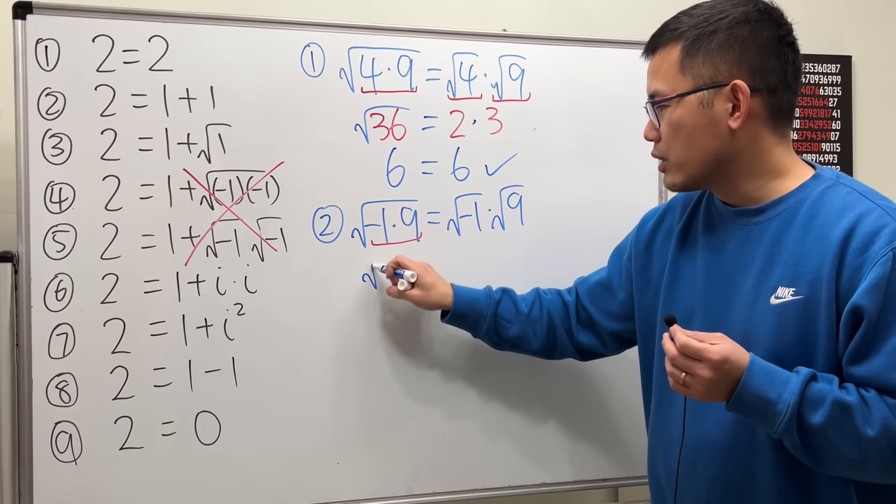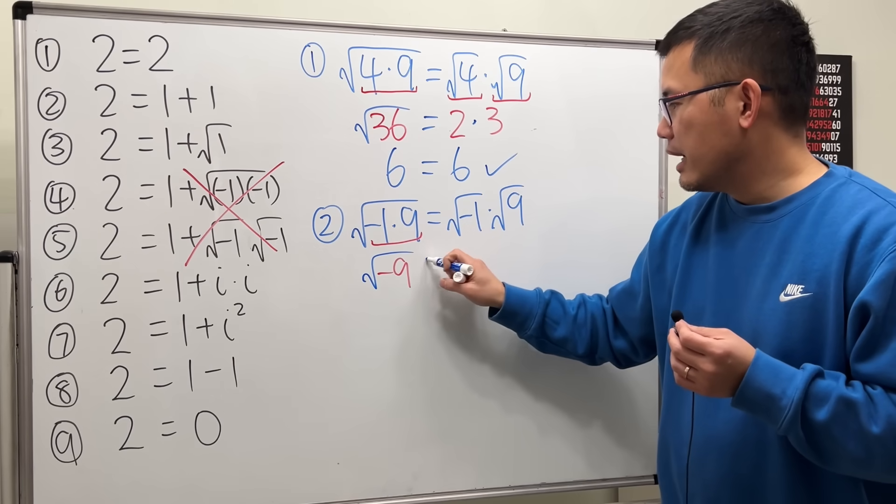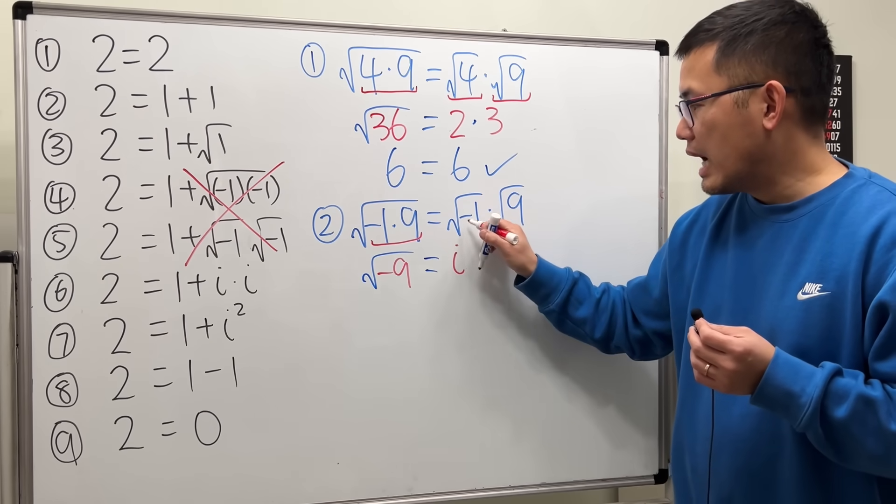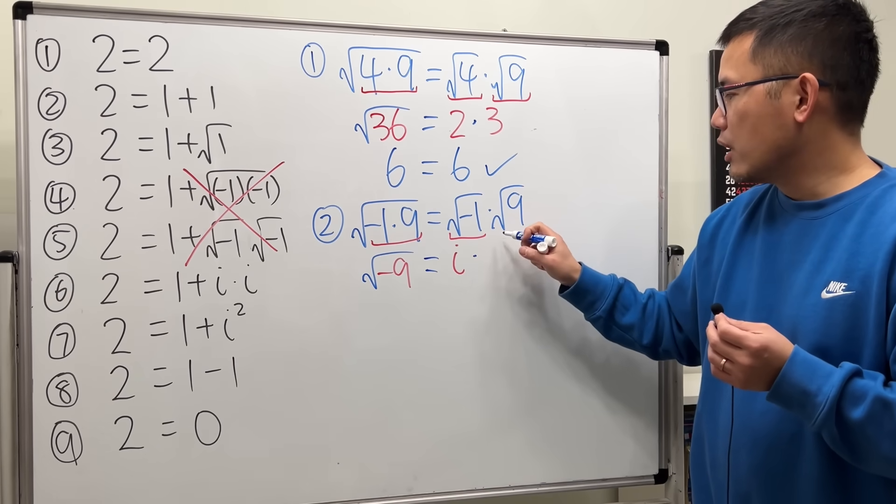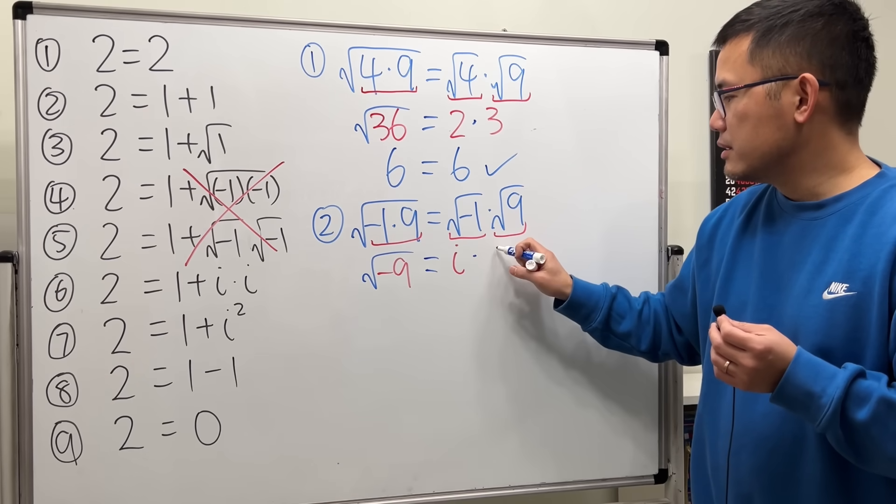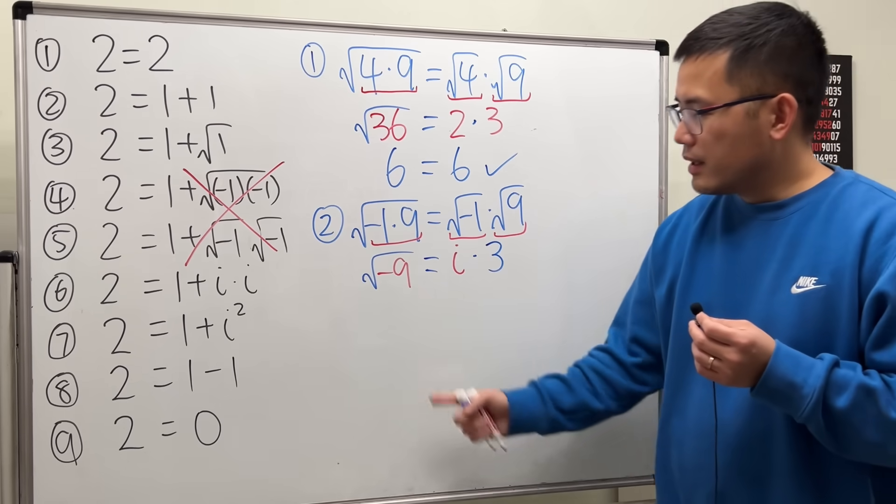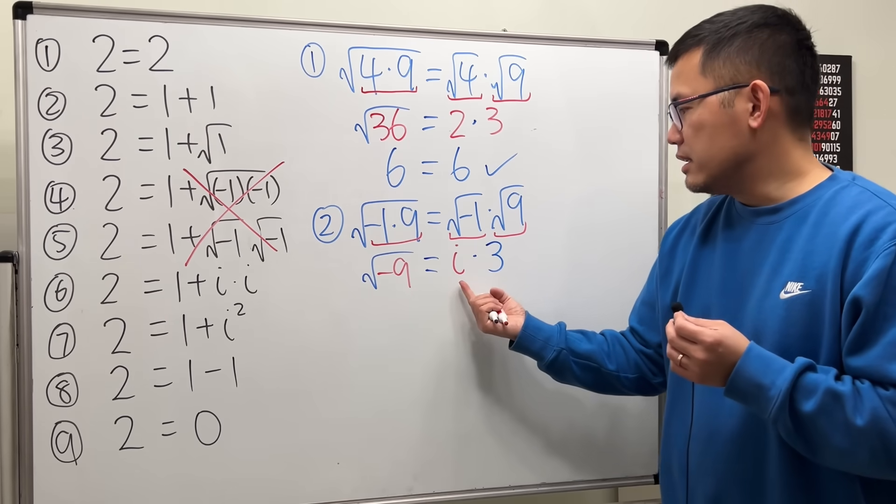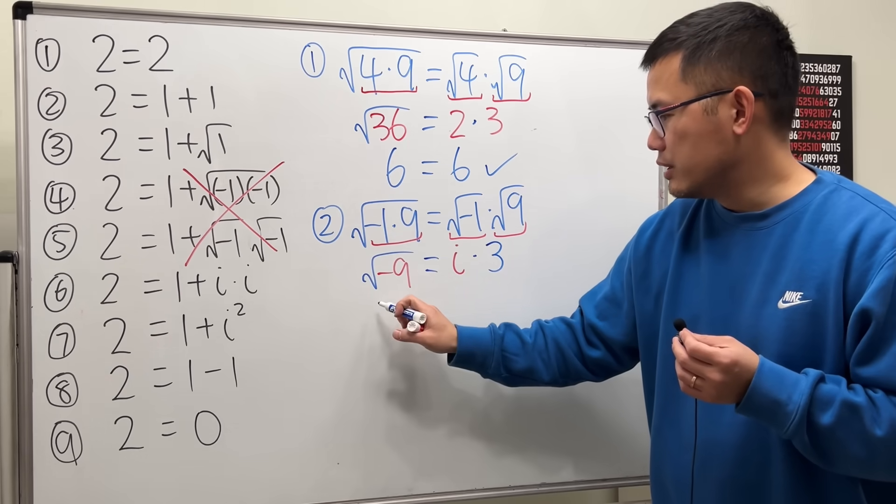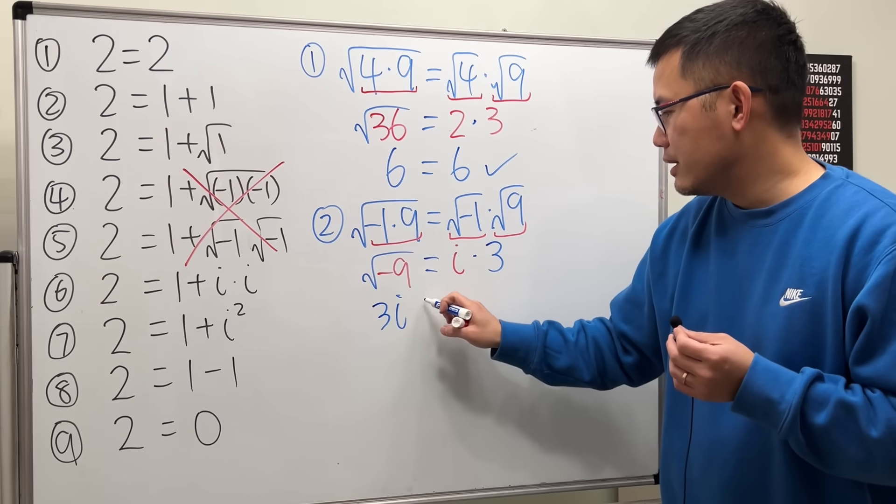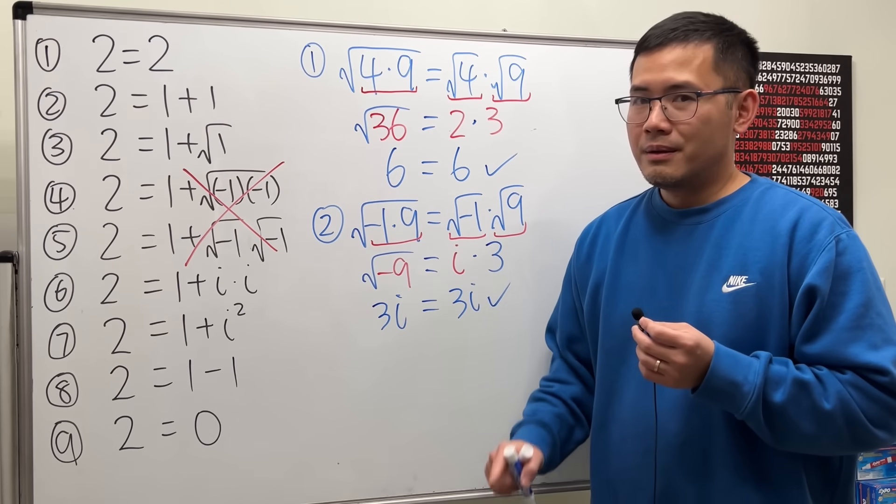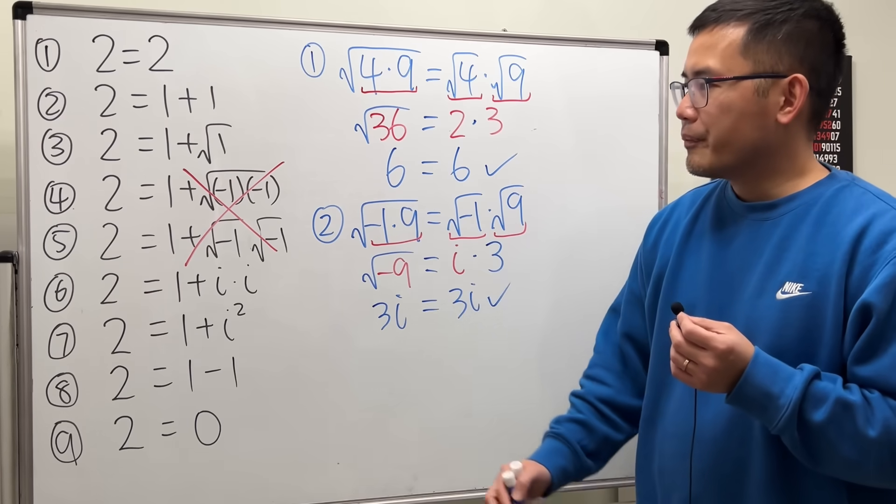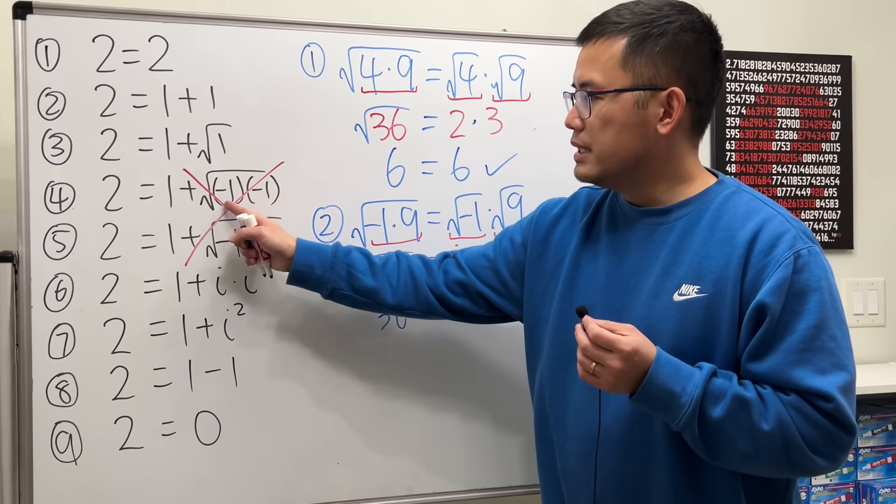Here's the deal. This right here gives us square root of negative 9, and this right here is i, right? Square root of negative 1 is i, and then square root of 9 is 3. Square root of negative 9 is indeed equal to 3i, so this right here is 3i equals 3i. Checks, yeah.